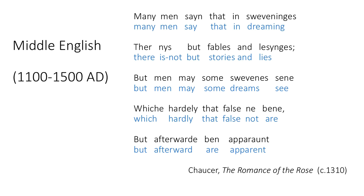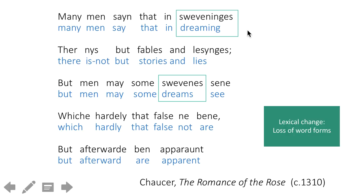I want you to look at some of the changes that are there. Some of the words sort of look familiar, but there are definitely some differences. We can actually break down the differences to a bunch of different levels of linguistic structure. You'll notice that some words are just unfamiliar — specifically, the words 'swevenings' and 'swevenous.' Those words don't exist in Modern English, but they mean dream or dreaming. This shows that there can be lexical change, or a loss of word forms.